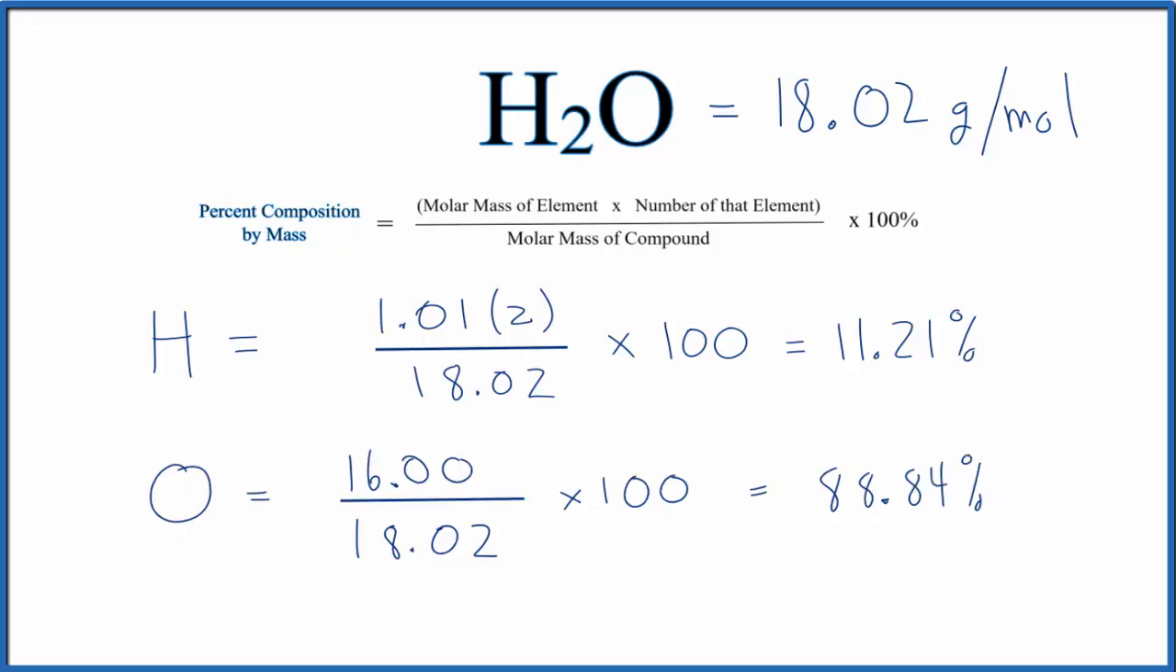Note that because of rounding, my periodic table has two digits after the decimal point. These numbers should be very close to 100, but they might not be exactly 100. This is Dr. B with the percent composition by mass for H2O, and thanks for watching.